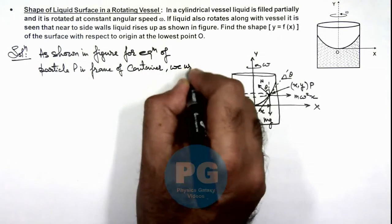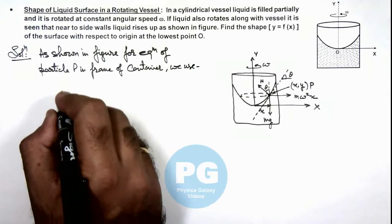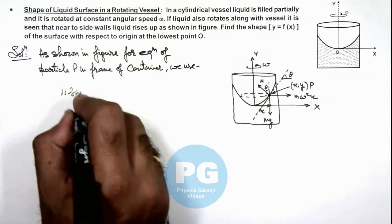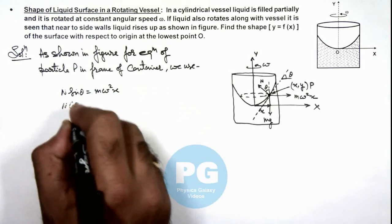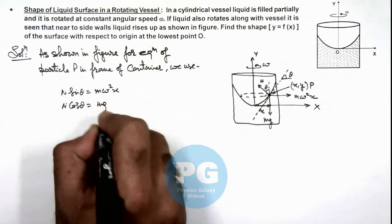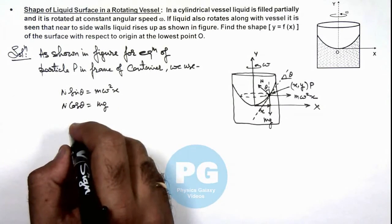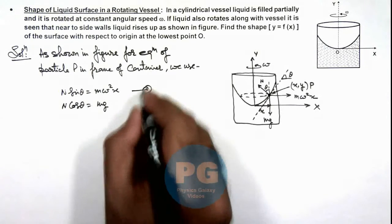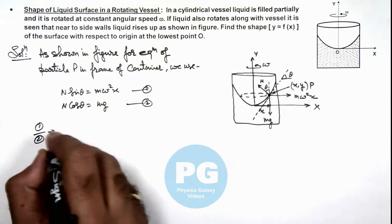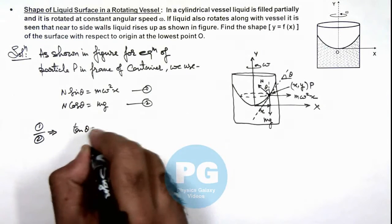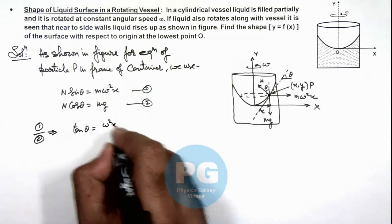We use, here we can write, N*sin(theta) = m*omega^2*x and N*cos(theta) = mg. And from these relations, if this is first equation, this second equation, then equation 1 divided by equation 2 will result tan(theta) = omega^2*x/g.